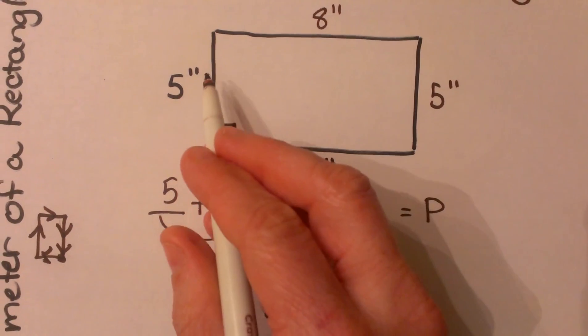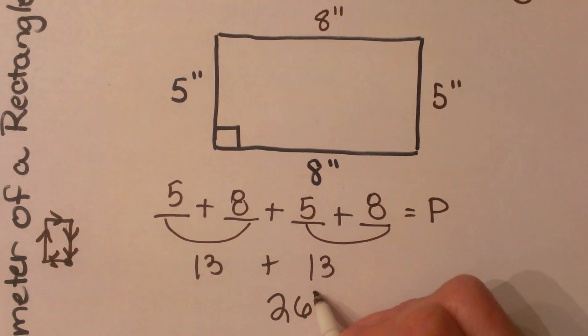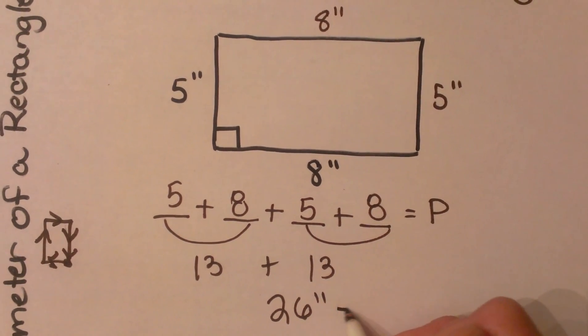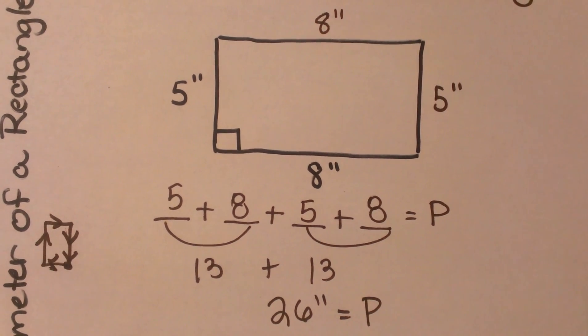Because these units are all with the double marks, that means inches. So the perimeter is 26 inches in length.